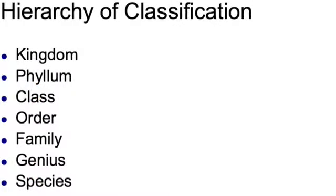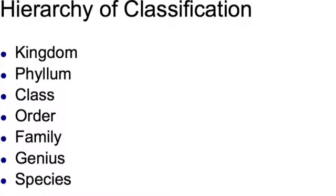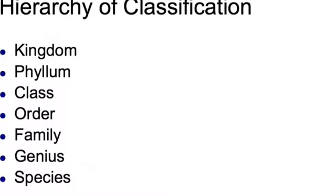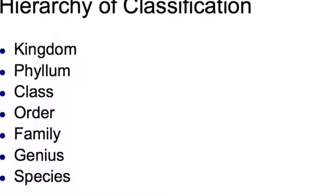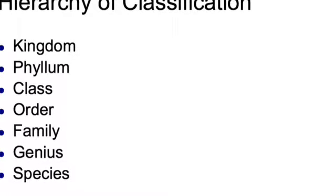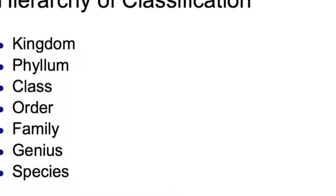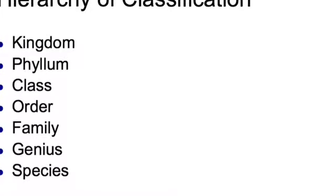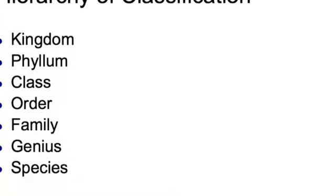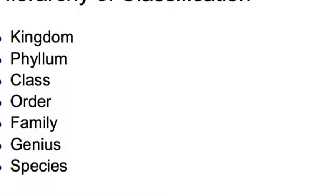We look at the hierarchy of classification: kingdom is the biggest group, followed by phylum, class, order, family, genus, and species — with species being the smallest or most specific. Kingdom has the most plants and species has the least.